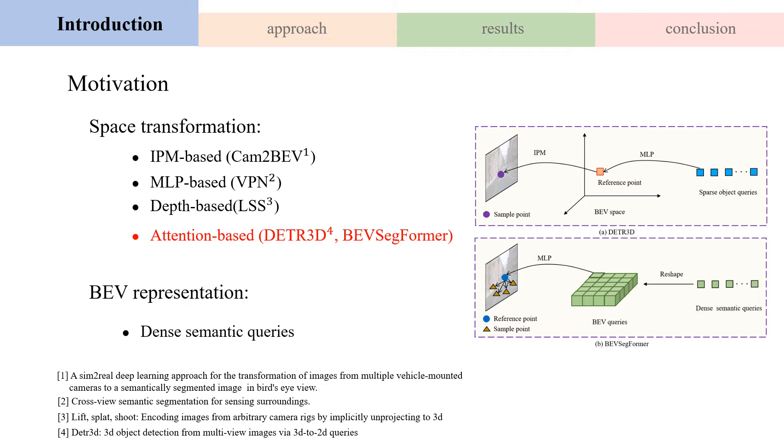Inspired by DETR3D, we propose a method to compute the view transformation by BEV to image queries using the cross-attention mechanism in the transformer.